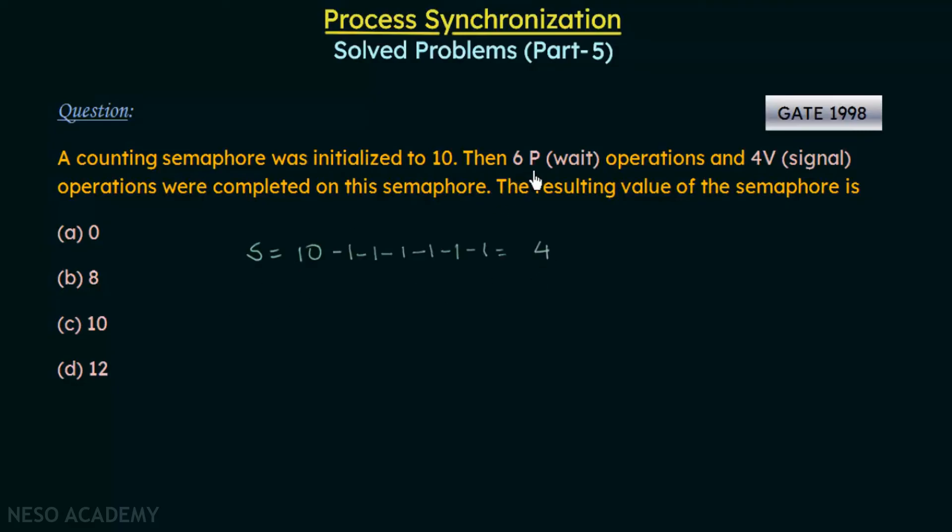When the P operation is performed six times, the resulting value is 4 because whenever P is performed, the semaphore is decremented by 1. Value of S is equal to 4. Now, what happens after this? The signal operation, which is V, is performed 4 times. If it is performed 4 times, what does it mean? We have to add 1 to it 4 times: 1, 2, 3, and 4. What does it give us? 4, 5, 6, 7, 8. We get the value equal to 8.